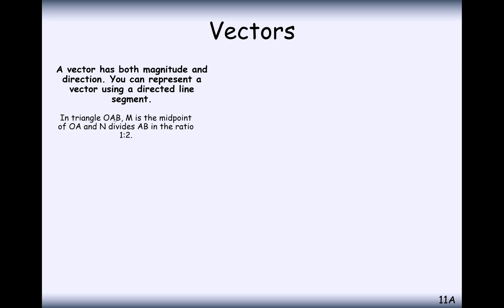Let's have a go at a slightly more difficult question. We've got triangle OAB. M is the midpoint of OA, and N divides AB in the ratio 1 to 2. So immediately think about drawing yourself a diagram, just like we've got here. O to A is vector a, O to B is vector b. We want to express O to N in terms of a and b.